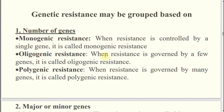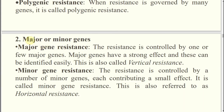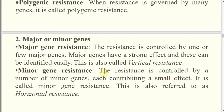Resistance governed by a single gene is monogenic, resistance governed by few genes is oligogenic, and resistance governed by many genes is polygenic. Regarding major or minor genes: major gene resistance means the resistance will be very strong, minor gene means the resistance will have very small effect. Major gene means one or few major genes which have a stronger effect - coming under monogenic or oligogenic. Minor genes means many genes with smaller individual effects.